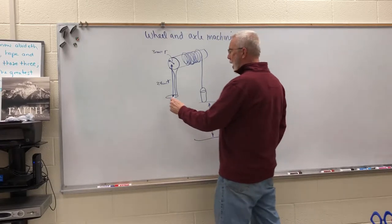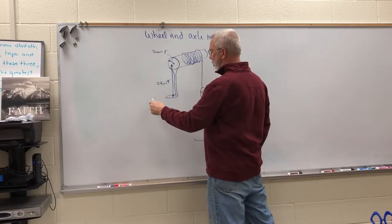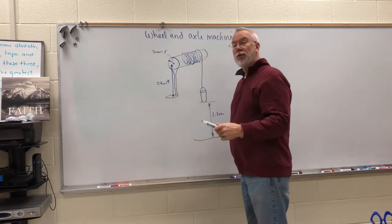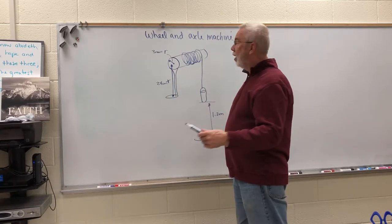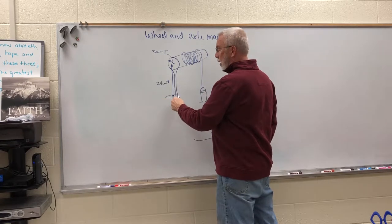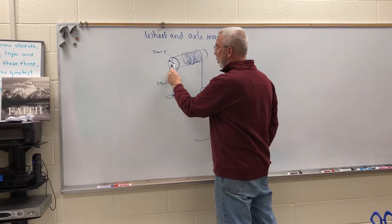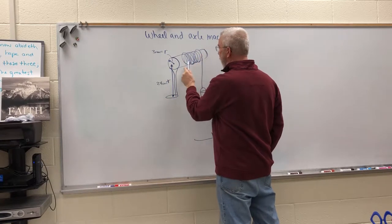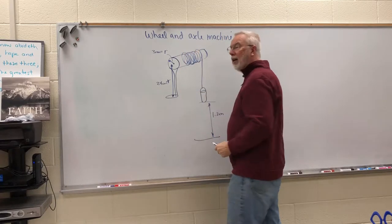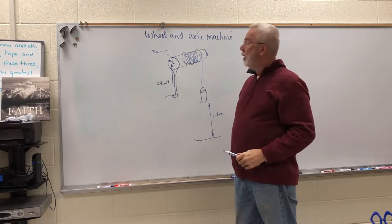So the wheel is the handle and the axle is the shaft that the rope seems to be tied or wrapping up on. So first of all we want to try to solve for the mechanical advantage.